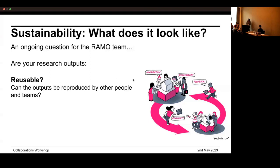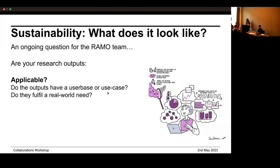Then, really thinking about whether your research outputs are what we're calling 'applicable' — not only are they open and able to be picked up, but do they have a user base you're aware of? Are there use cases you're aware of? Do you know what context they could be used in and how they might be picked up? Do they fulfil a real-world need and solve a real-world problem, so there will be people beyond the research team who are interested in making sure this research continues into the future?